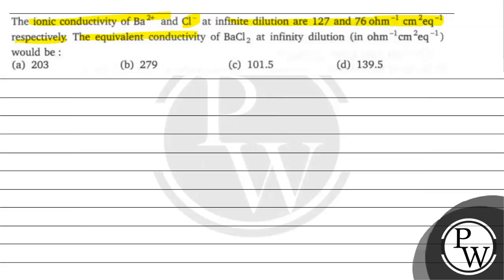The equivalent conductivity of BaCl2 at infinite dilution in ohm inverse centimeter square equivalent inverse would be option A 203, option B 279, option C 101.5, option D 139.5.